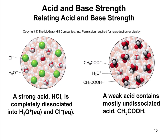Here are the same things we just talked about in picture form. A strong acid is completely dissociated — notice that when you put HCl in solution, you end up with H3O+ and Cl-; you don't see any HCl molecules left combined. Whereas, if you look at the weak acid, most of it stays in the CH3COOH form, and only a small amount is dissociated.